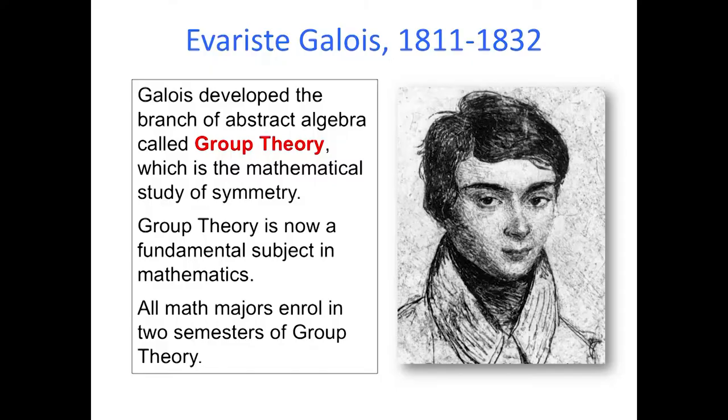Now, what has that got to do with symmetry? Galois realized that the roots or solutions of an equation are symmetric in the sense that they're not random, but they're governed by certain transformations that can send one root or solution to another. So there's symmetry in the zeros of a polynomial. And that is the beginning of this branch of mathematics called group theory.